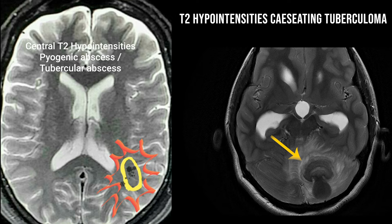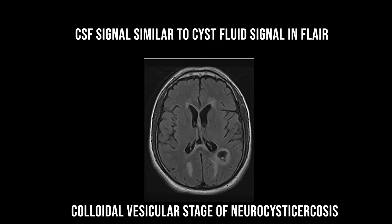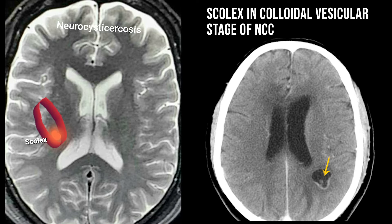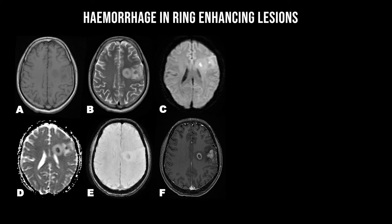Solitary lesions are most probably pyogenic abscesses, while multiple ring enhancing lesions suggest neurocysticercosis, tuberculomas, or metastasis. Taking T2 signal into consideration is sometimes very useful — pyogenic abscesses or tubercular abscesses have central T2 hypointensity secondary to macrophages and free radicals. If CSF signal is similar to the FLAIR signal, you are most probably dealing with a colloid vesicular stage of neurocysticercosis. Another important clue is identifying the scolex, which is eccentrically located and best appreciated on heavily T2-weighted images.